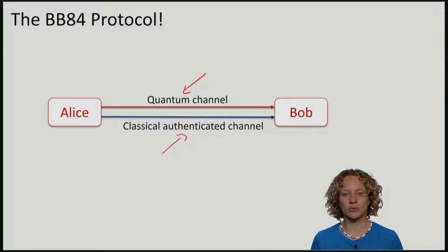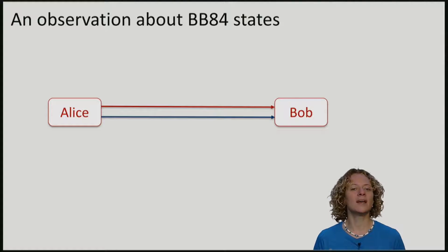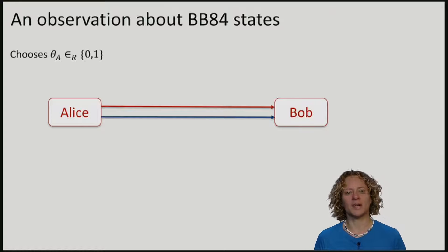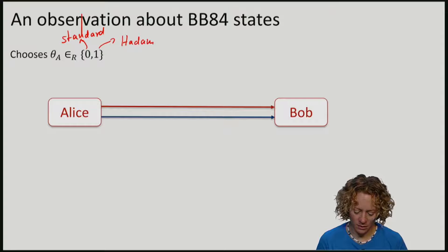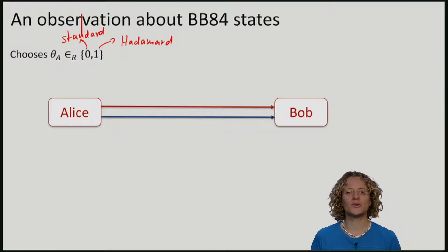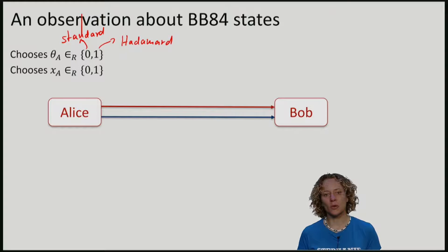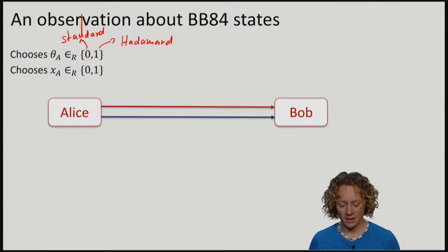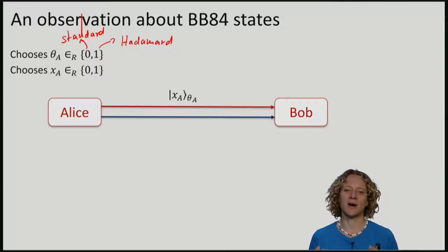Before delving into a full key distribution protocol, we will, as before, start with some useful observations. Let's imagine the following simple setting. Alice chooses a basis — 0 or 1 — where 0 is for the standard and 1 for the Hadamard basis. She also chooses a random bit xa, and what she is going to do is send that bit encoded in the basis theta to Bob. That means if theta is 0, she sends xa in the standard basis, and if theta is 1, she sends xa in the Hadamard basis: plus if x is 0 and minus if x is 1.